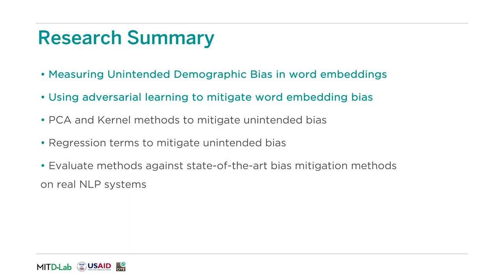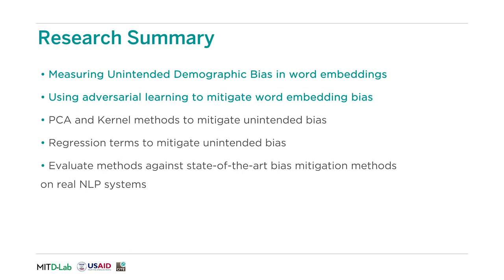Our big goal is to find ways to mitigate the bias that we might inherently find in text corpora or the types of data representations used to build NLP applications. For this module, we cover measuring unintended demographic bias in word embeddings and using adversarial learning to mitigate word embedding bias. The corresponding thesis goes further and covers techniques for identifying and mitigating unintended demographic bias at other stages of the NLP pipeline.